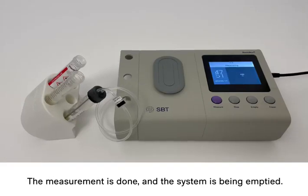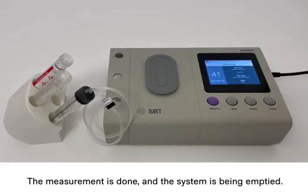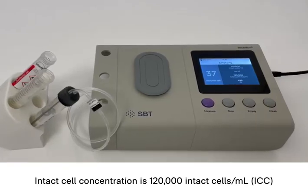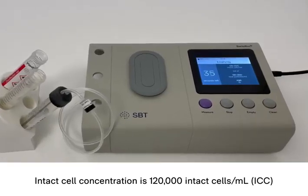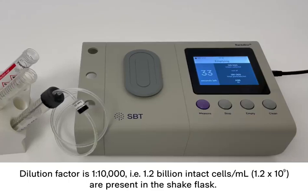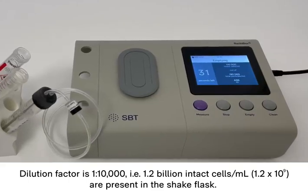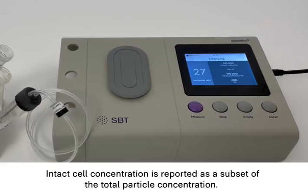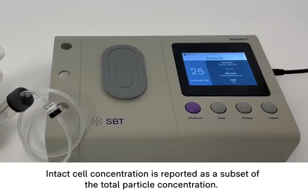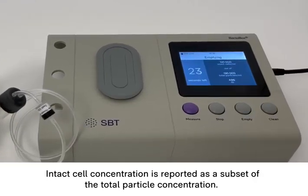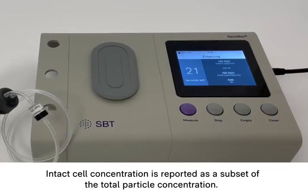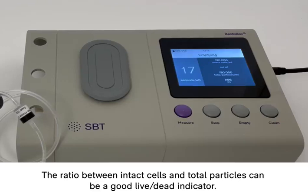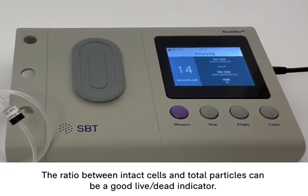Now the measurement is done and the system is being emptied. The display shows that the intact cell concentration is 120,000 intact cells per mL. When multiplied with the dilution factor, this corresponds to 1.2 billion intact cells per mL. Note that the intact cell concentration is reported as a subset of the total particle concentration. If you're following something like a growth curve, the ratio between intact cells and total particles can be a good life/death indicator.